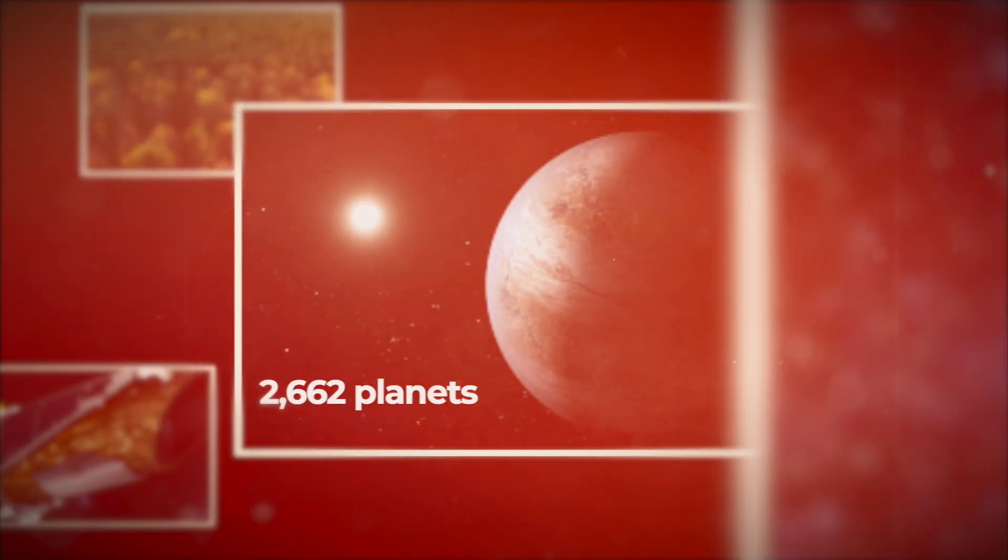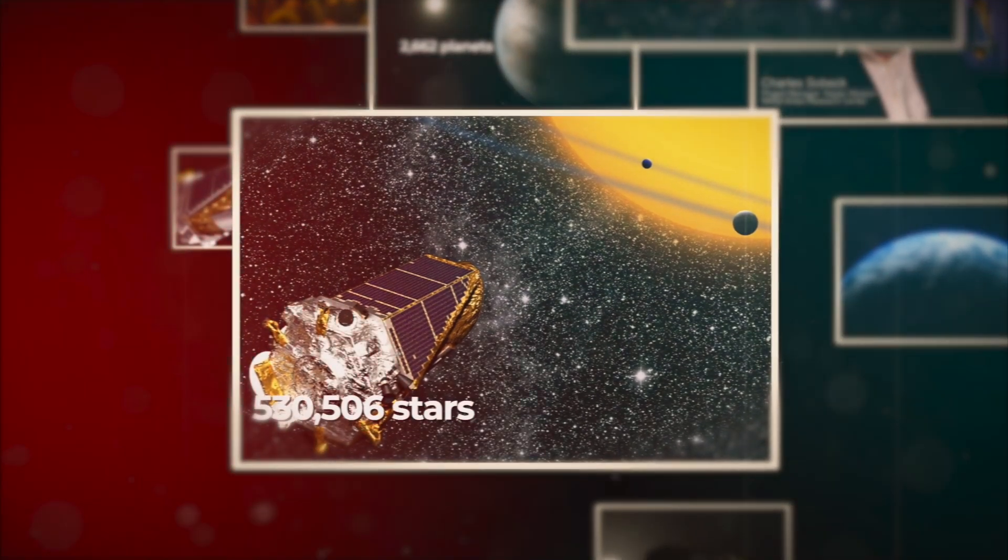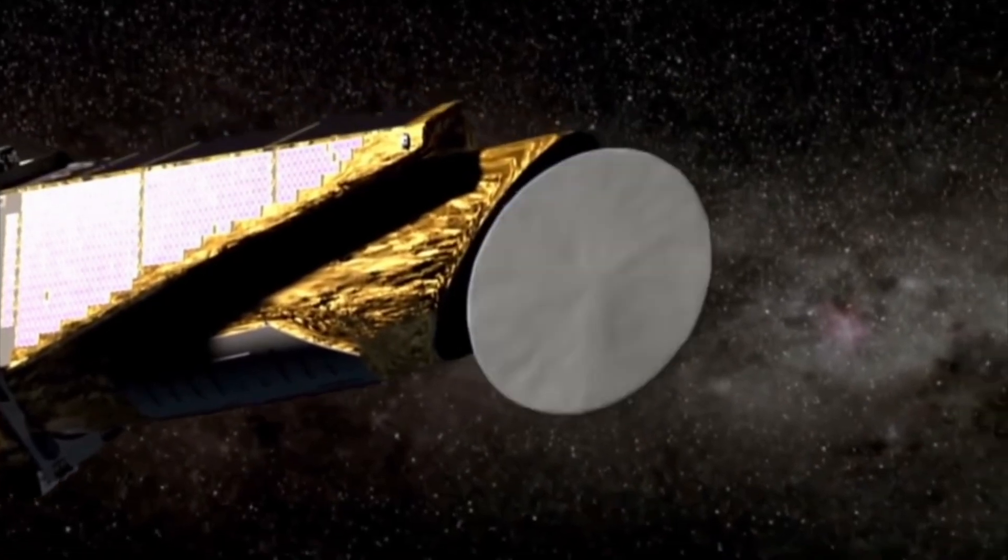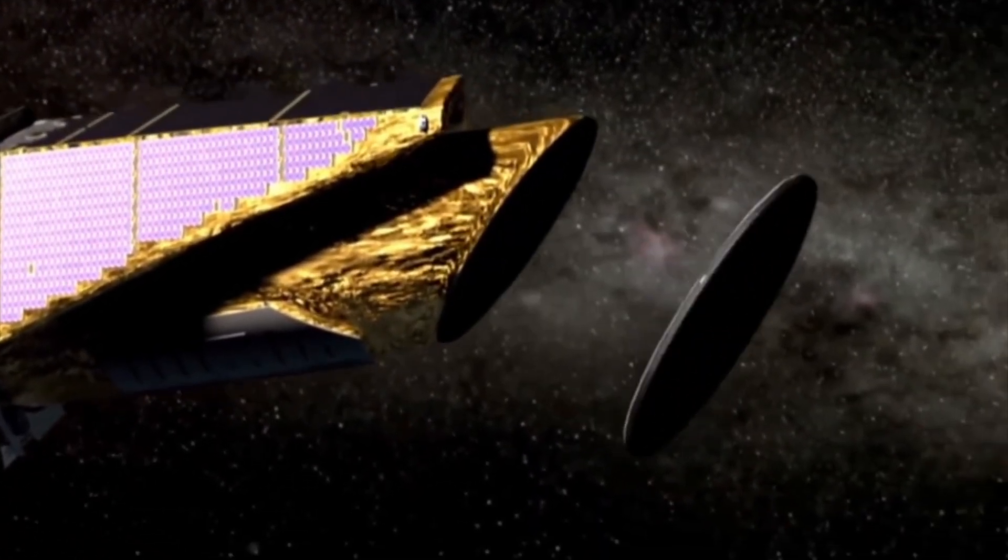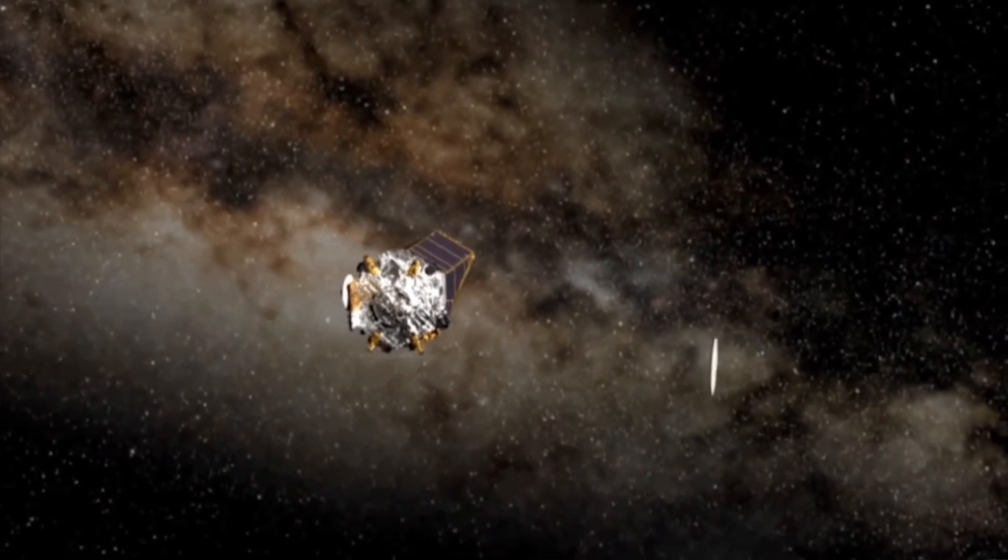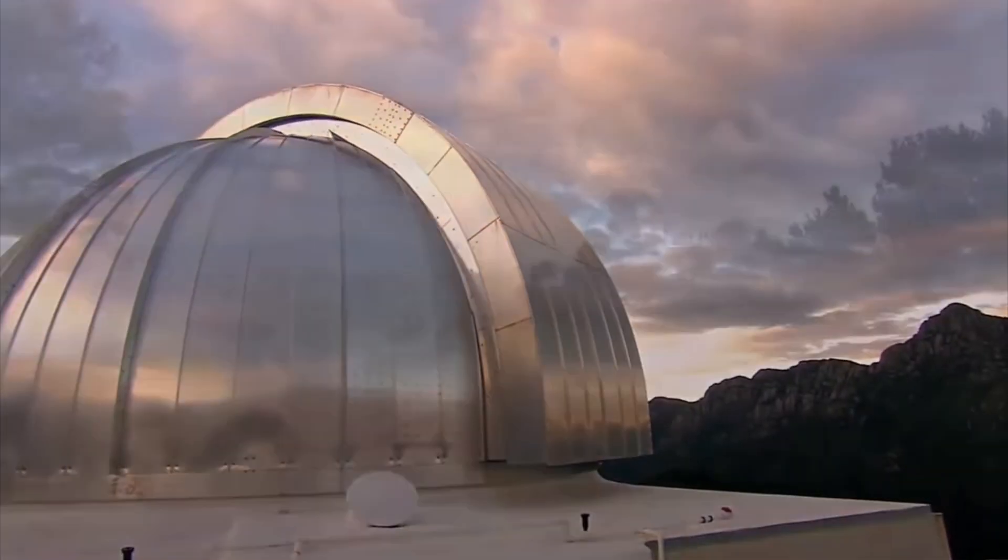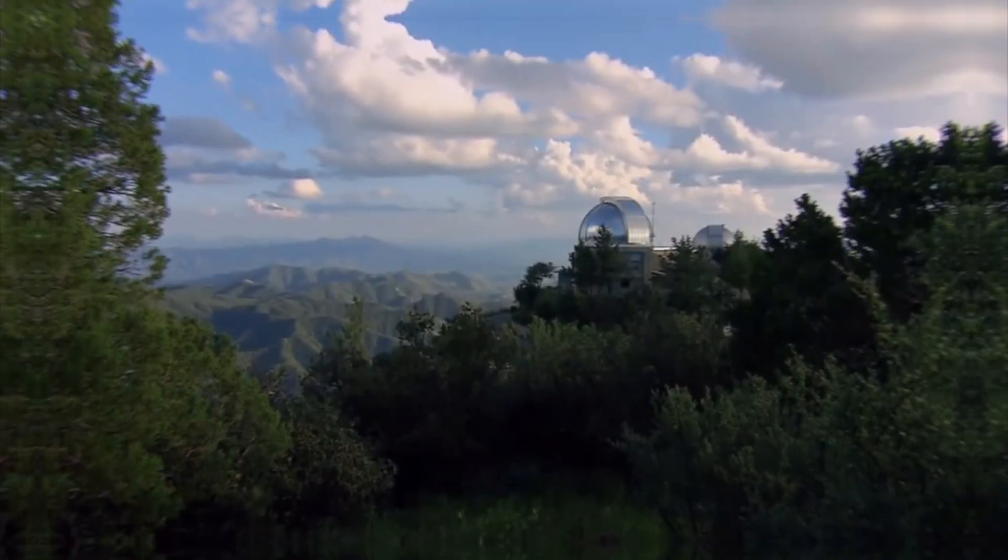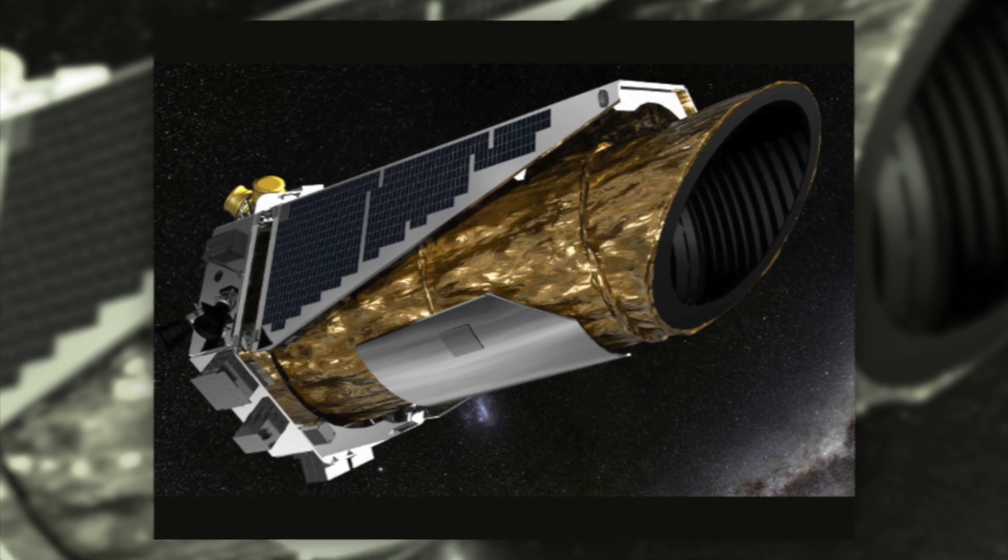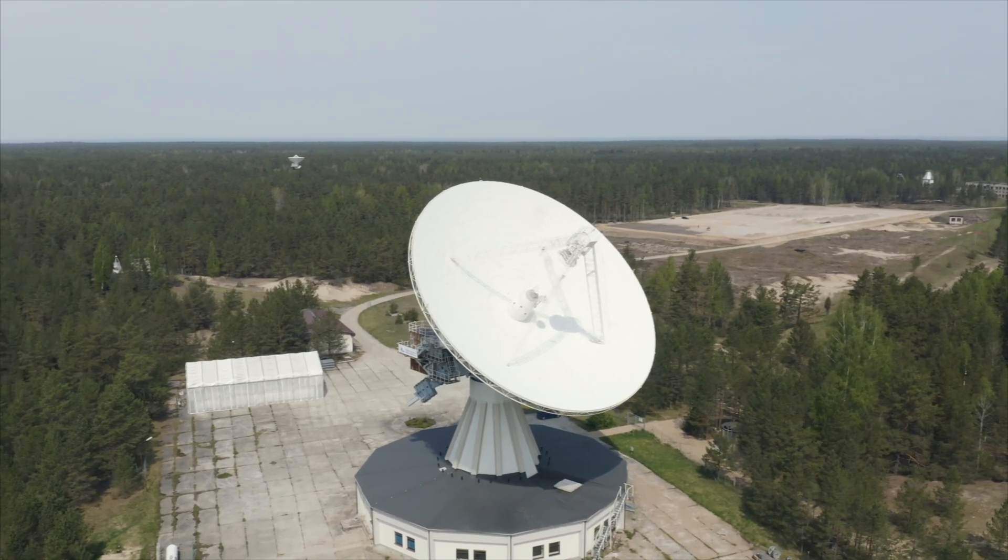Kepler discovered 2,662 planets and observed 530,506 stars. Its primary mirror is the largest mirror on any telescope outside of Earth orbit, with a field of view comparable to one fist held at arm's length, and a 12-degree diameter. Instead of sharp images, the photometer has a soft focus to produce superior photometry. In terms of photometric performance, Kepler performed admirably, far better than any Earth-bound telescope, yet it fell short of its planned objectives.